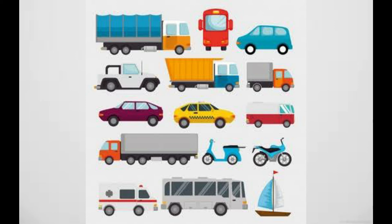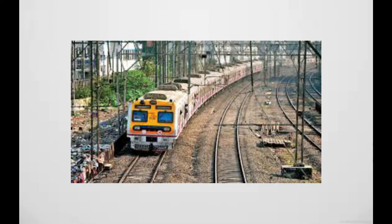hospitals. A police jeep carries policemen. Have you ever traveled in a train? Of course, we all have traveled in a train — when we went to our grandparents' house. Which places did the train pass by? Meadows, mills, hills, villages, wells, temples, potato fields — these are places we can see from a train.